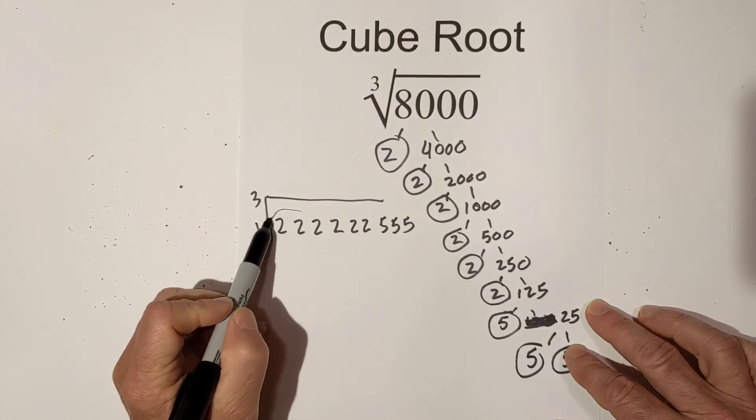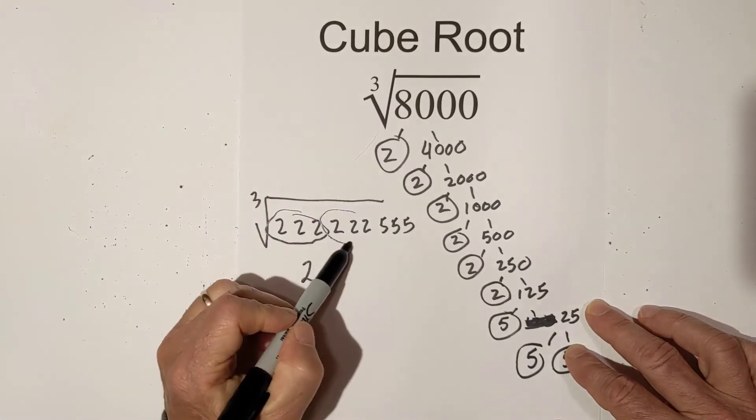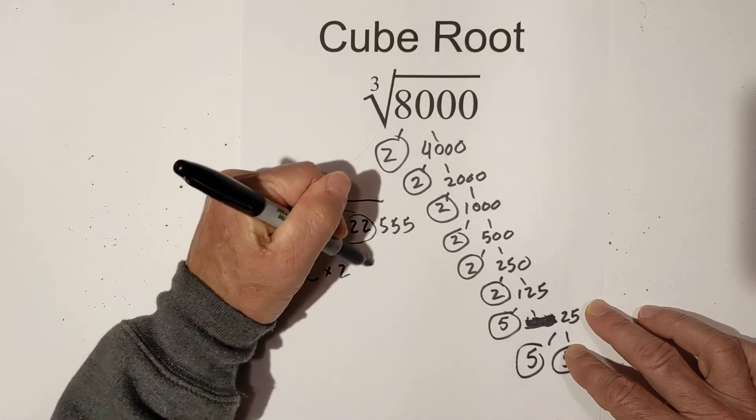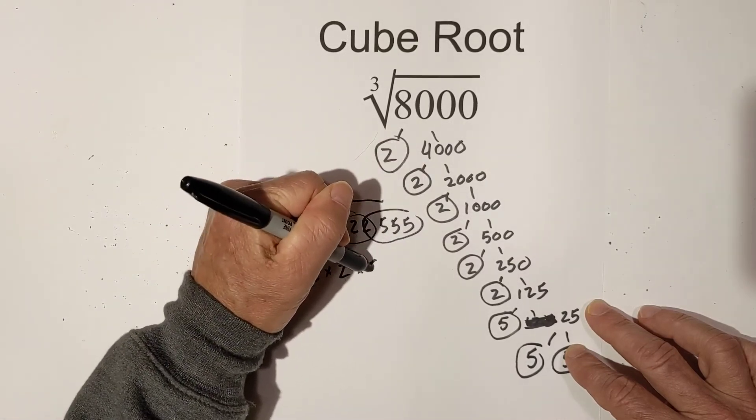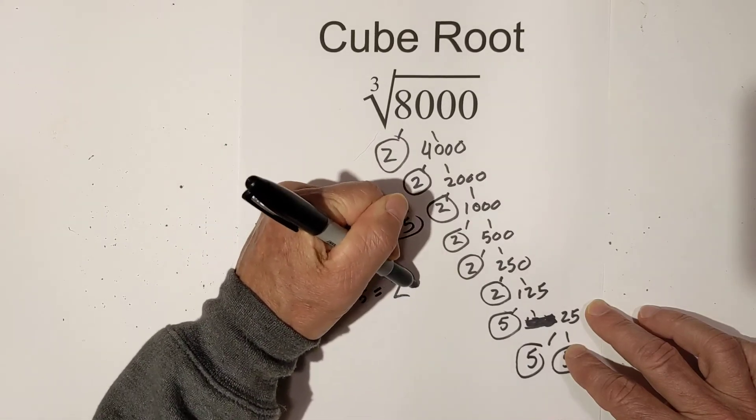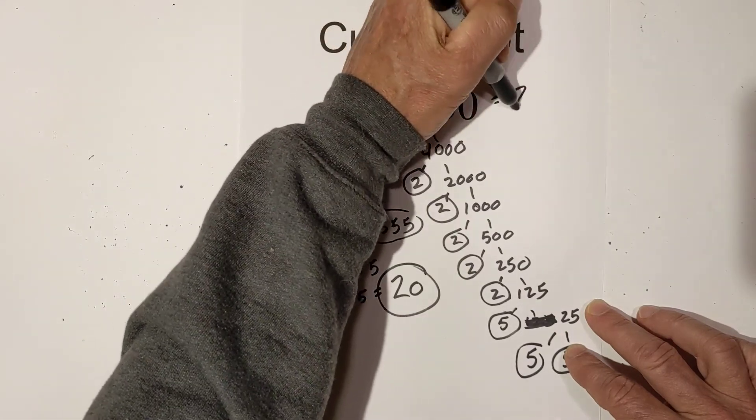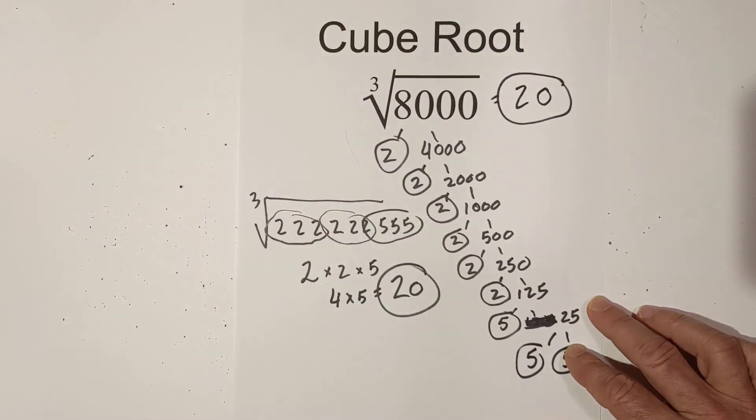We do the exact same thing, pull out groups of 3 because it is a cube root. And then just multiply these together. So we have 2 times 2 is 4 times 5 equals 20. So the cube root of 8,000 equals 20.